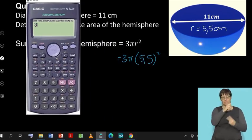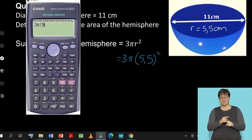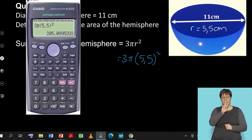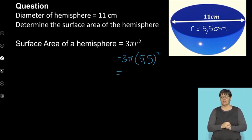Let's pop this into my calculator. 3π times 5.5². So the surface area is going to be 285, and I can see if I round off to the second decimal place, it's actually going to become 285.11 centimeters squared. It remains squared because it is surface area.